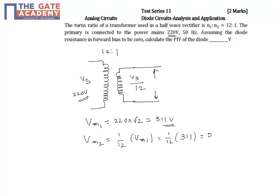So the peak inverse voltage in case of a half-wave rectifier is nothing but the peak value of the supply voltage. Here this is the supply voltage, so that means Vm2, which is 25.9 volts.